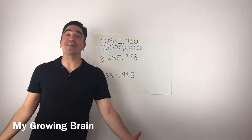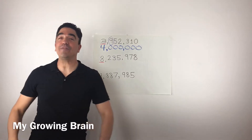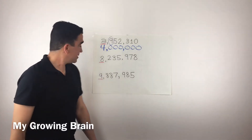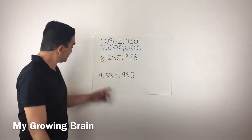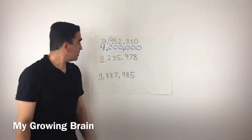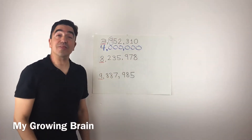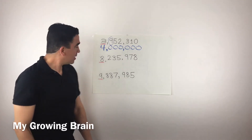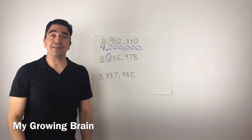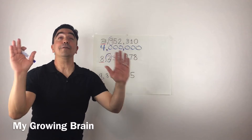Let's take a look at our second problem: eight million, two hundred thirty-five thousand, nine hundred seventy-eight. The eight in the millions place is underlined, so I have to look at the number in the hundred thousandths place to tell that eight what to do. The two is in the hundred thousandths place, and it's going to tell the eight to stay the same.